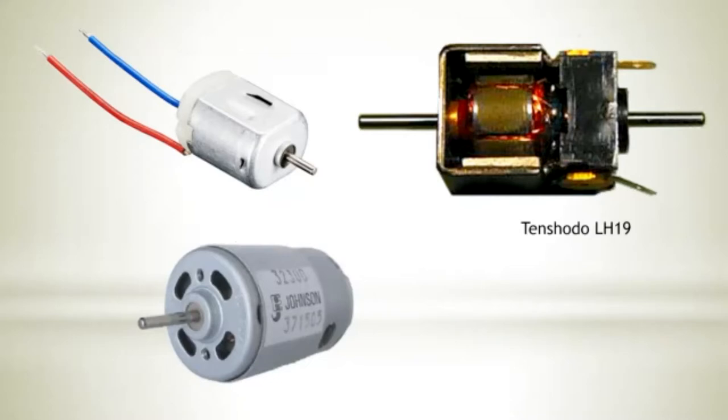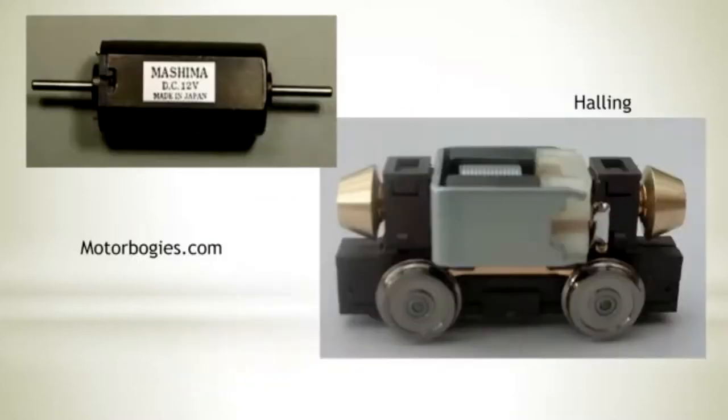In practice, what a typical three pole DC motor looks like. You can get them with multiple poles for better performance. In model railways, you sometimes get five poles, sometimes seven poles, but very common with the old three pole versions. There's examples of them. The one in the top left is more associated with cheap toys. The one on the right, the Tinshodo, is one that's used in model railways.